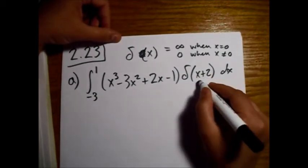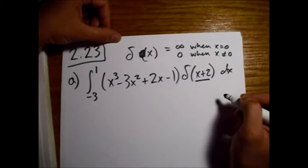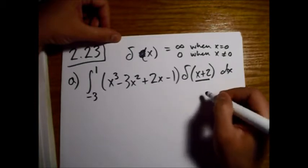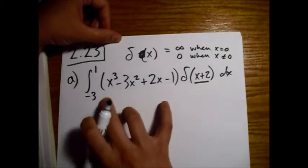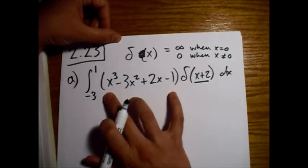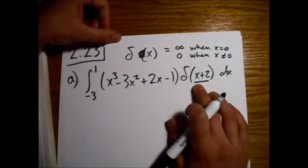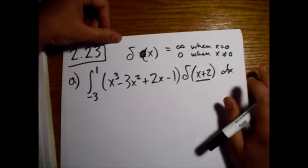So when this thing inside here is equal to 0, we'll get 1 times this evaluated at that point. Otherwise, this will be 0, and the integral won't give us anything.